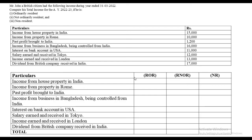Based on the rules: income from house property in India — since it's in India, everyone will pay tax, so the amount of 15,000 will appear in all three columns. Next, income from property in Rome — Rome is a foreign country, so only the first person will have to pay tax. Past profit brought to India — again, past profit means no one pays tax for it.